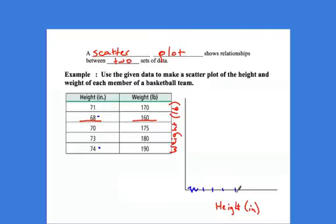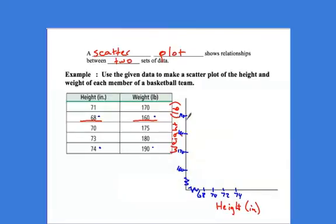I can plot all my dots here. So 68, 70, 72, 74. Now for my weight, I've got to go, let's see, my lowest is 160, my highest is 190. So if I go by 10 starting at 160, now I've got dots to plot. And that's it. This is the exact same thing as a line graph with one major exception, which I'm going to get to in a minute. So if I'm at 71 inches, just halfway between here, I'm going to go up to 170 and put a dot. If I'm at 68, I'm going to go up to 160, put a dot.